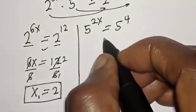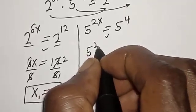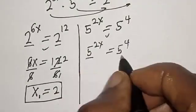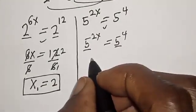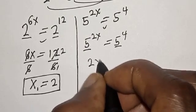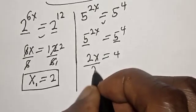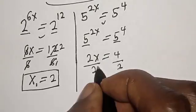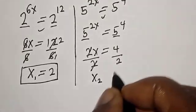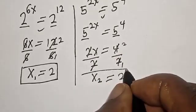For the second case: 5 raised to power 2s is equal to 5 raised to power 4. They have the same base, so 2s is equal to 4. Dividing both sides by 2, s2 is equal to 2.